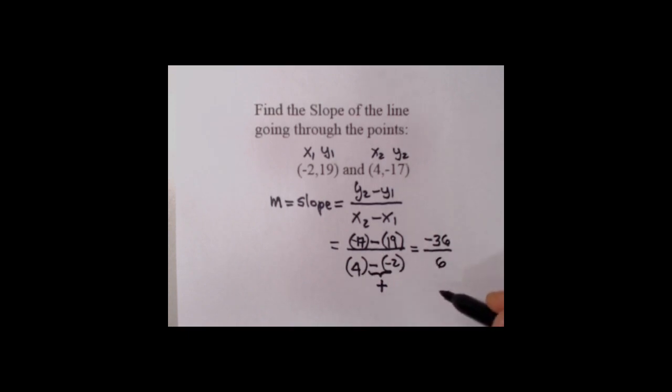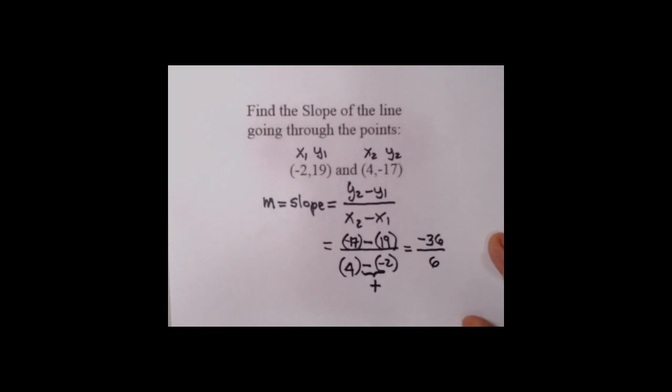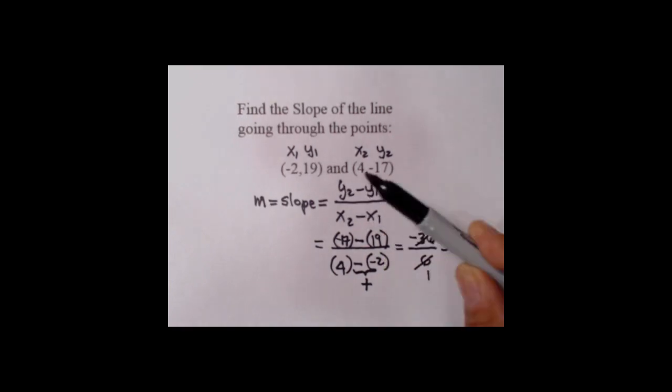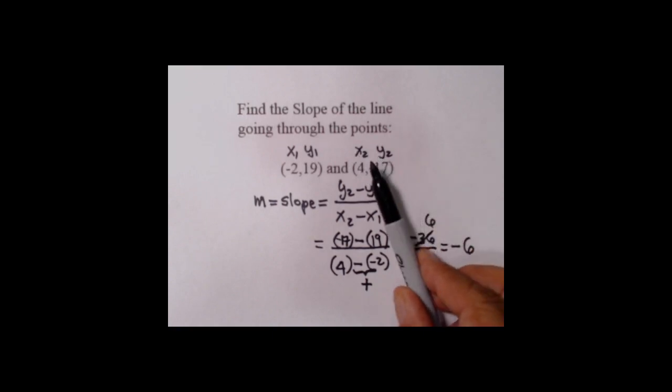If you can do any reducing on the fraction, definitely do it, and we can reduce by six top and bottom. The downstairs is one, so that means the answer is just the upstairs, so the slope turns out to be negative 6. If we were to draw this graph line, it would be going downhill to the right. Negative 6 is more than negative 1. Remember, negative 1 would be at 45 degrees; negative 6 would be steeper, something like that.